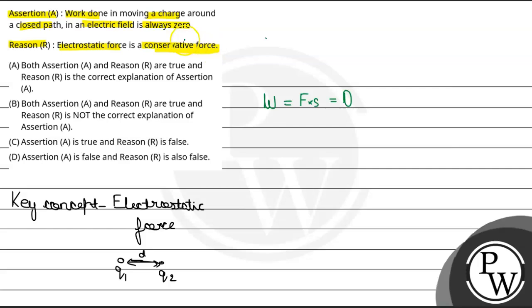Yes, it is conservative in nature. So option A humara correct hai - both assertion and reason are correct and reason is the correct explanation of assertion.